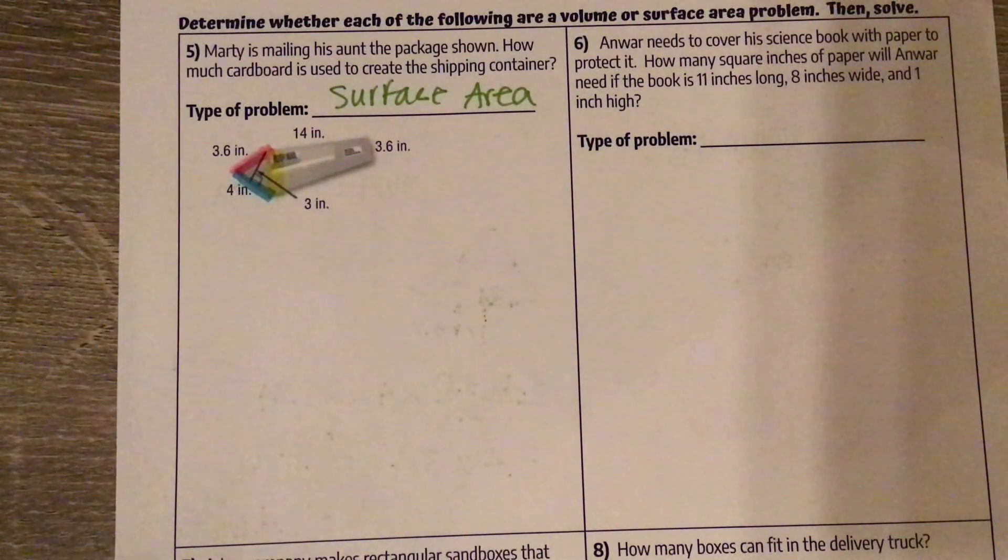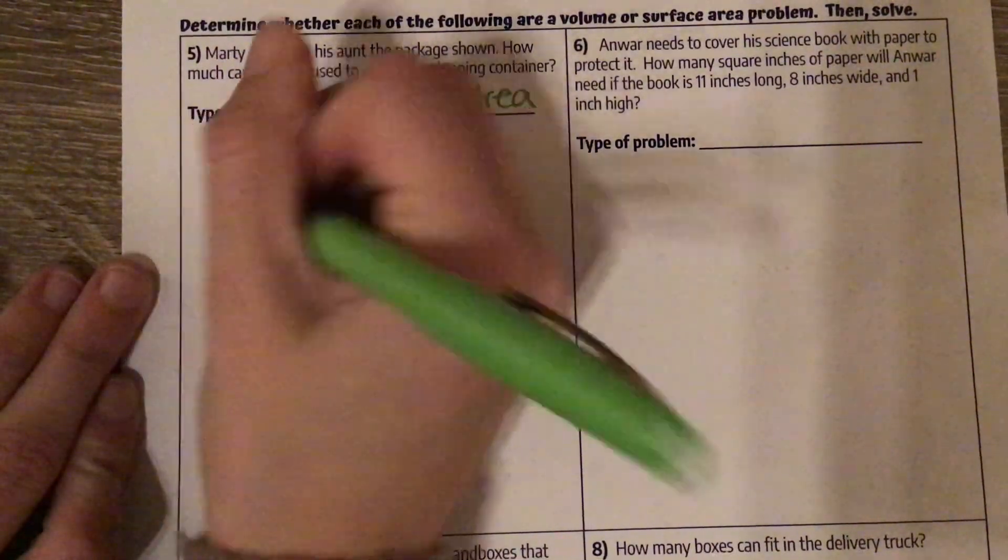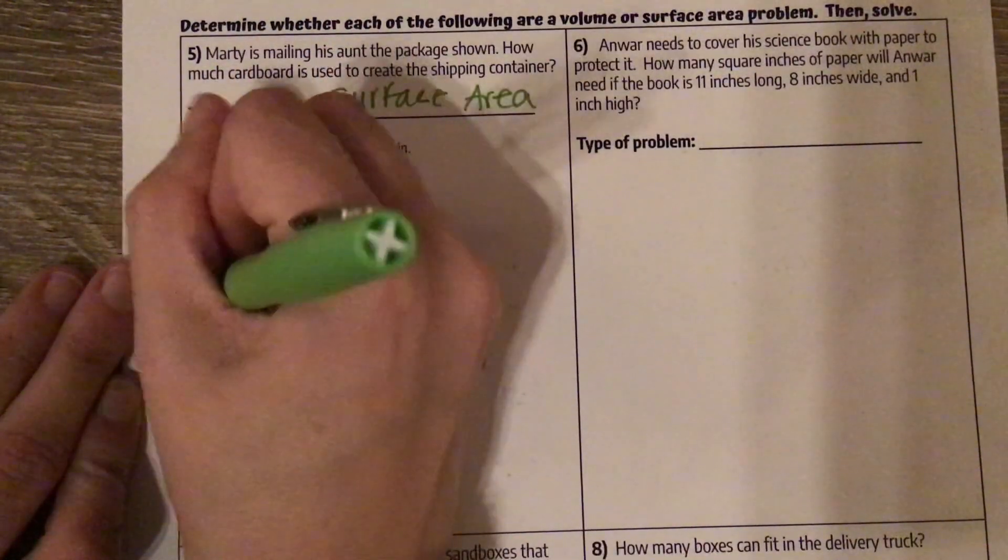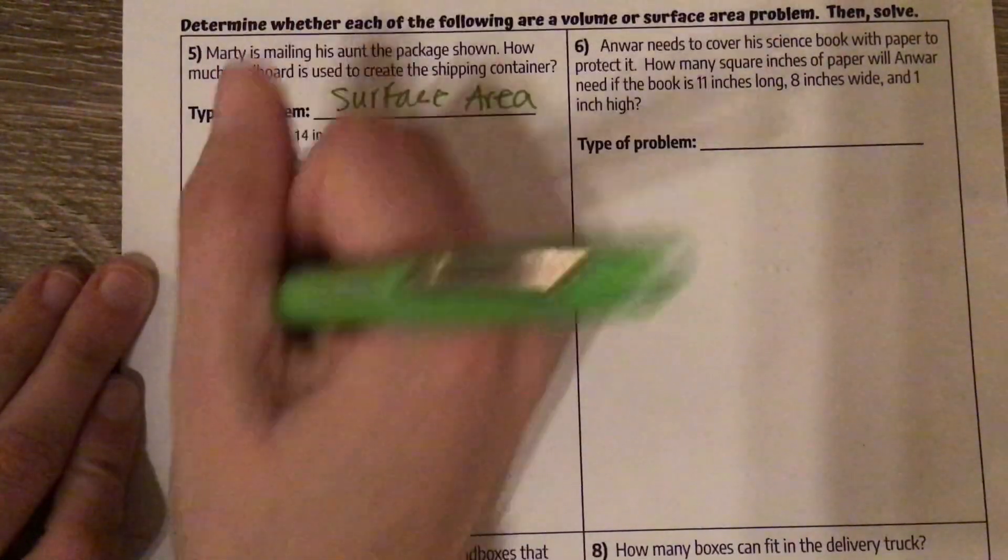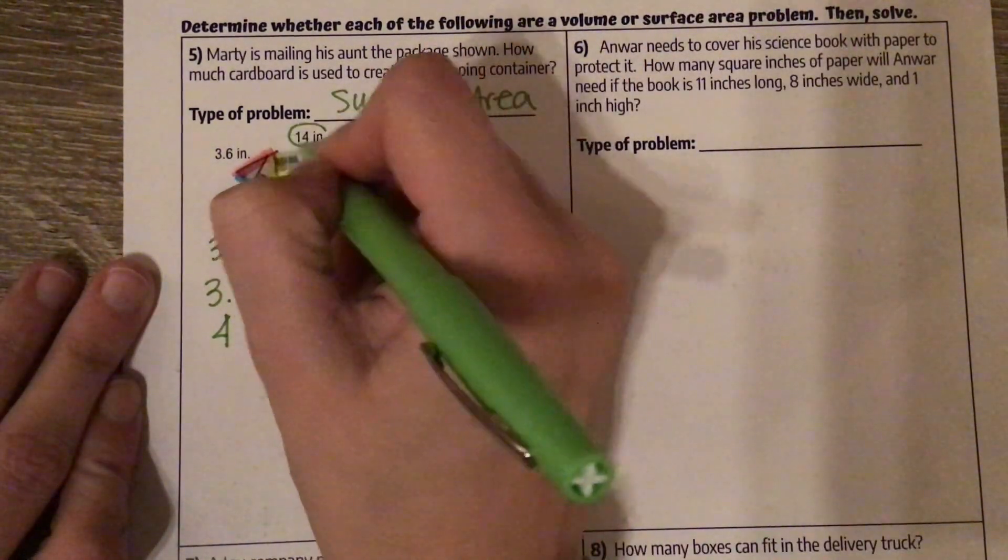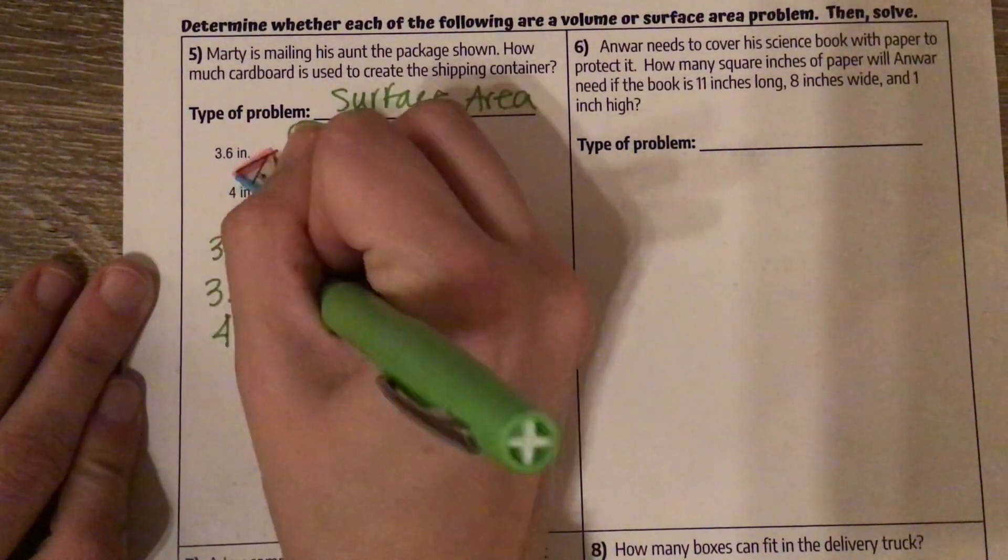Our three side measures are 3.6 for this side. This side is also 3.6. And this bottom is 4. We multiply each of those by that height or depth of the prism, so times 14 for all of those.